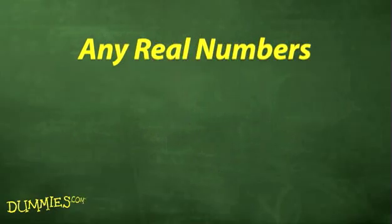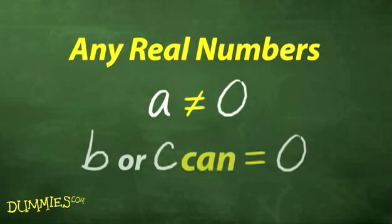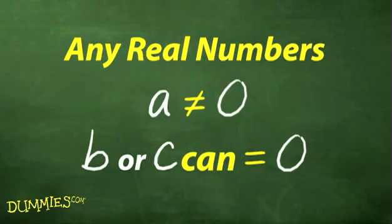Remember, a, b, and c are any real numbers. The a can't equal 0, but the b or c can equal 0.